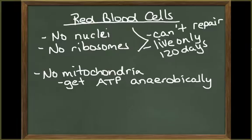Red blood cells of humans do not contain nuclei or ribosomes. As a result, red blood cells can't perform repairs of their own cell, and they end up living about 120 days. They have few organelles, so their energy demand is low.